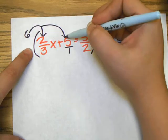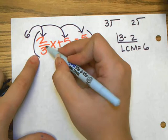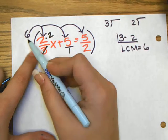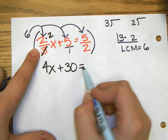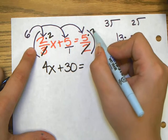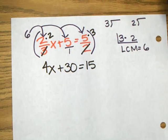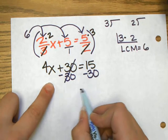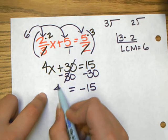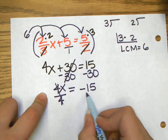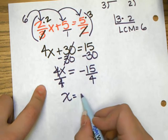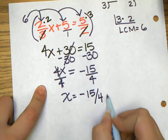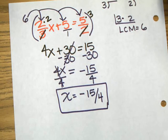I'm going to multiply everything by 6. So I'm going to distribute all 3 of these. 3 goes into 6 two times, 2 times 2 is 4x. 6 times 5 is 30. 2 goes into 6 three times. Now we have no fractions. So I'm going to subtract 30, divide by 4. A negative divided by a positive is a negative. And 4 can't go into 15. There's nothing divisible by both of them. So we've got negative 15/4.